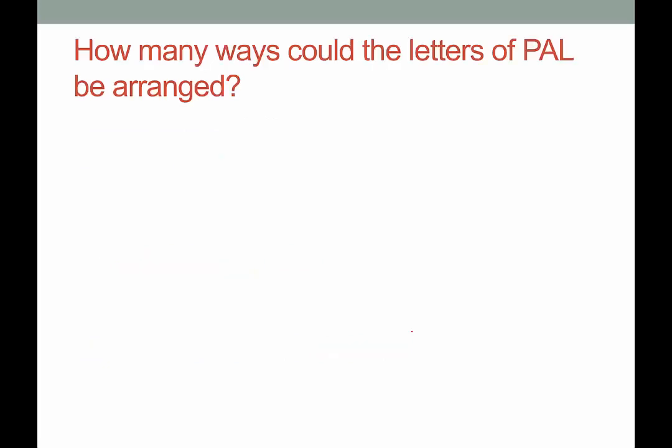All right, so let's use factorials. How many ways could the letters of PAL be arranged? In this case, there's three to choose from because it's a three letter word. So we can have three possibilities for the first, two possibilities for the second, and one possibility for the third. This is three times two times one, which is the equivalent of three factorial, which would be six.